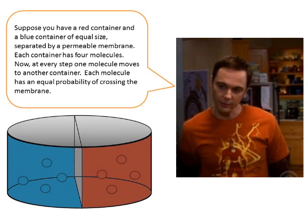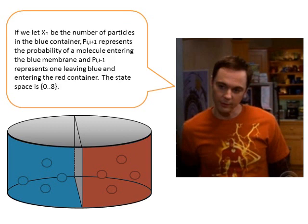Suppose you have a red container and a blue container of equal size, separated by a permeable membrane. Each container has four molecules. Now, at every step, one molecule moves to another container. Each molecule has an equal probability of crossing the membrane.